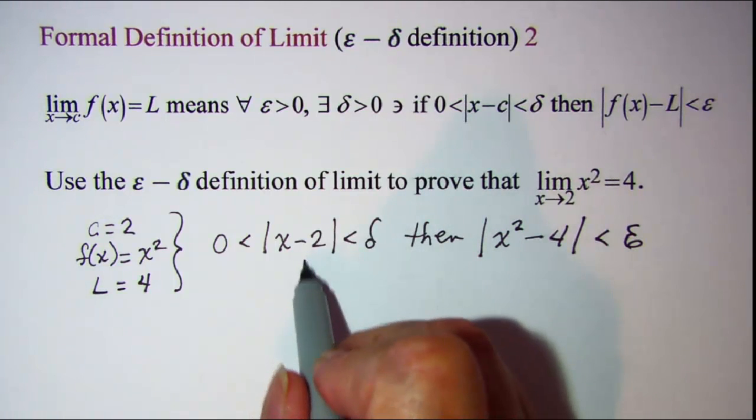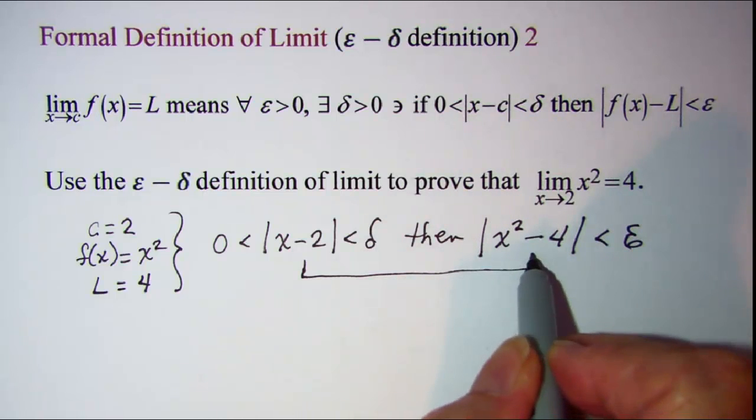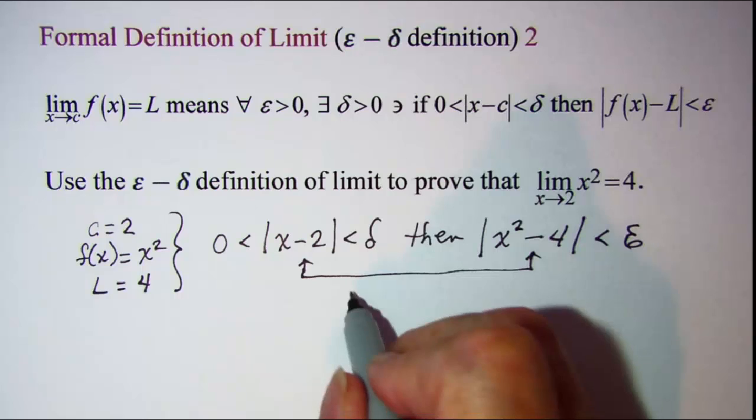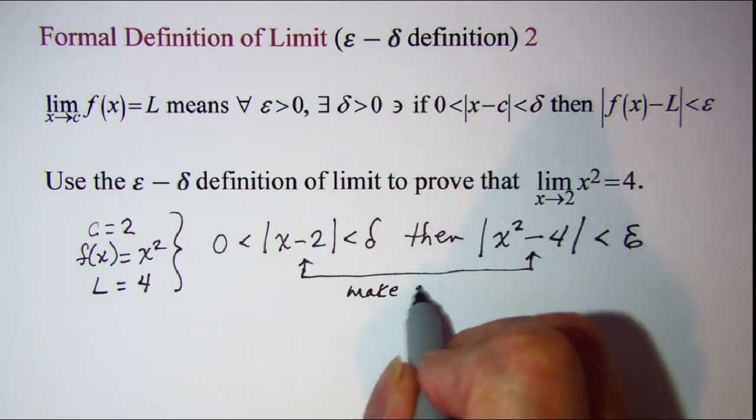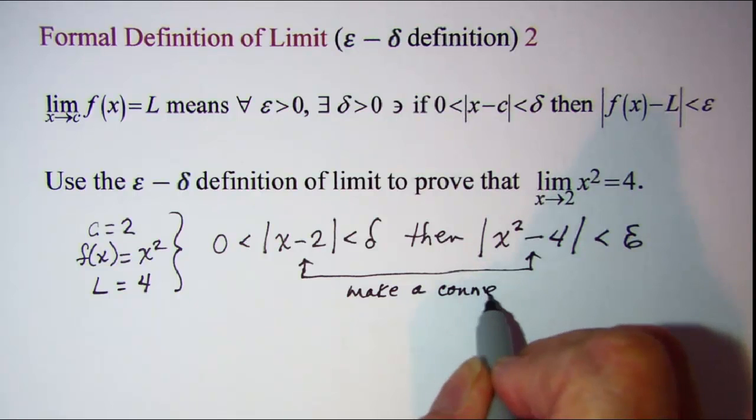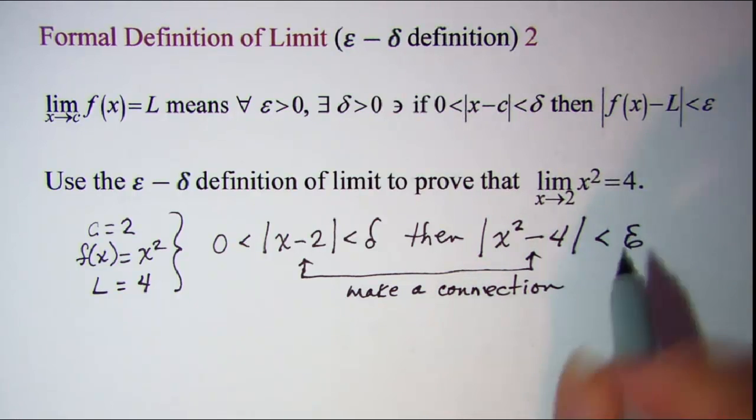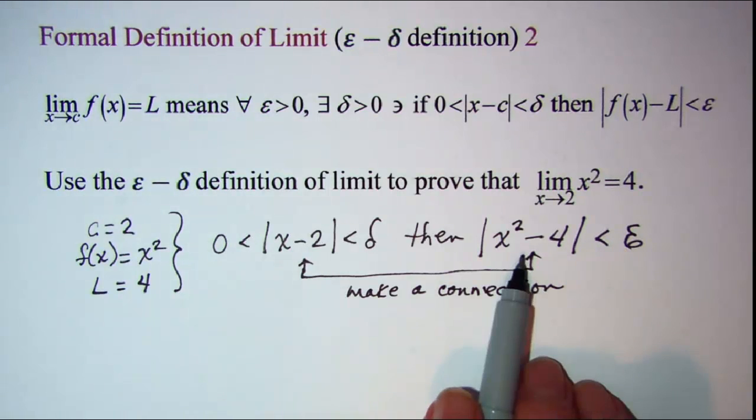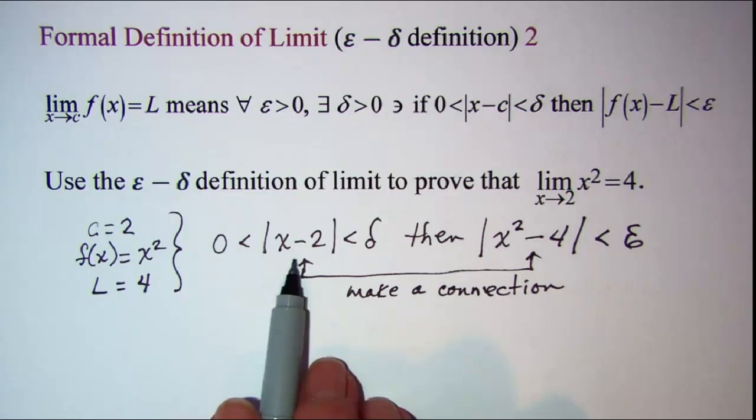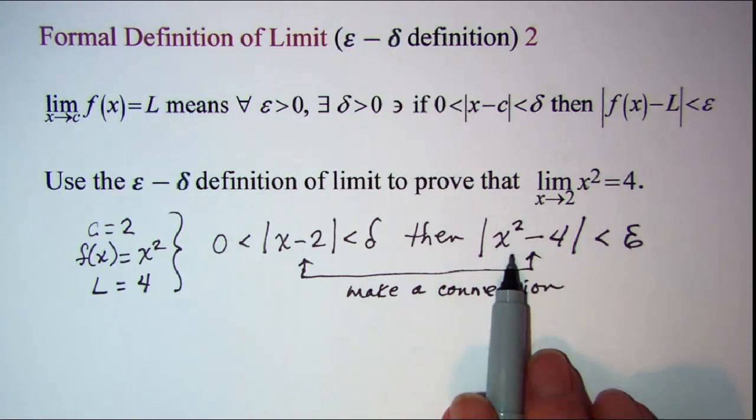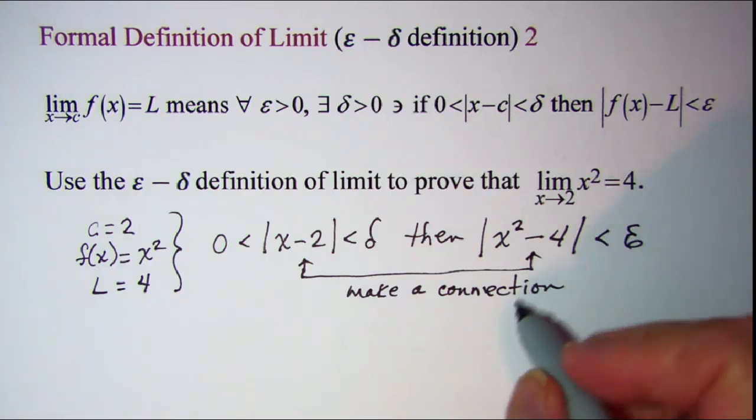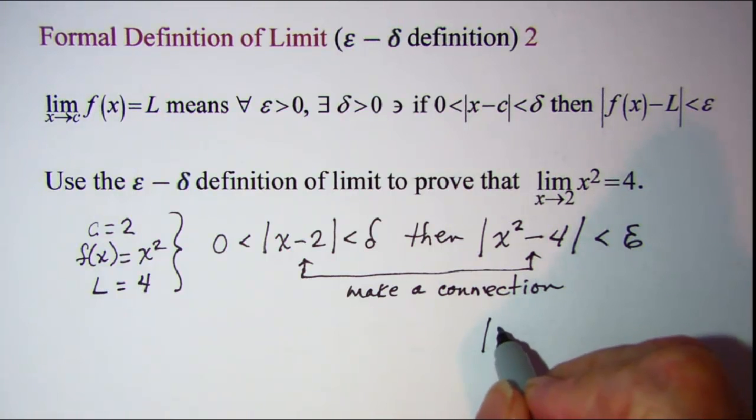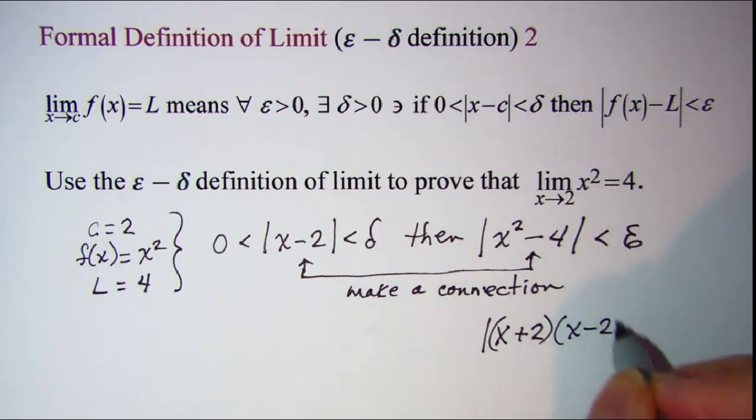So we want to make a connection here between these two absolute values. So we'll work with this one and try to get the absolute value to look like this. Well, we know that this is the difference of squares, so we can factor that into x plus 2 times x minus 2, and that needs to be less than epsilon.